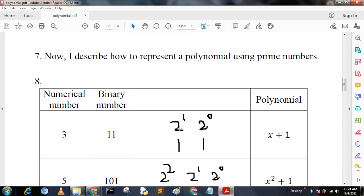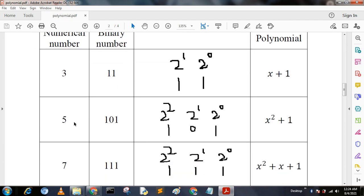Here we take the index numbers 1 and 0 and write it as x^1 + x^0, that is x + 1. Next prime number 5, we write this 101 as 2^0 + 2^1 + 2^2.